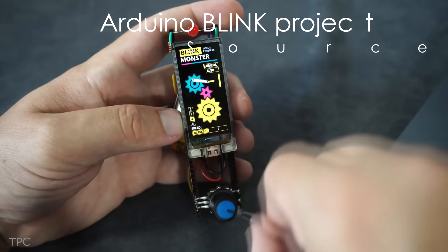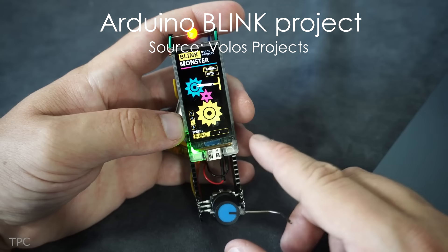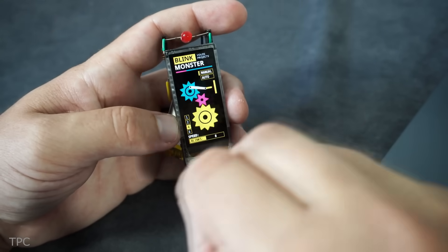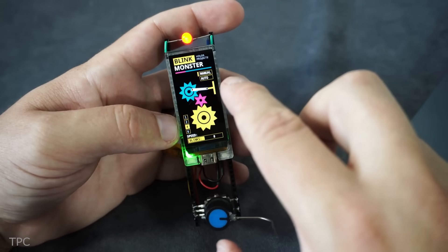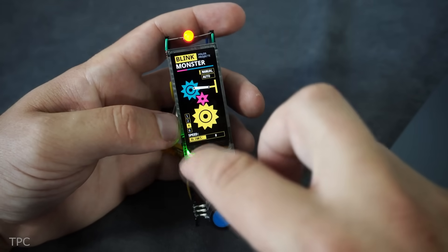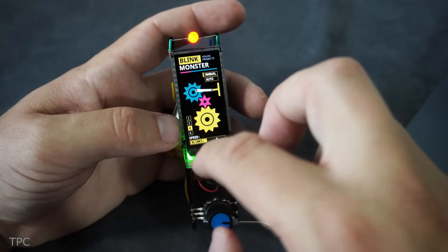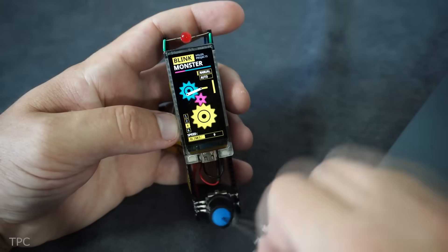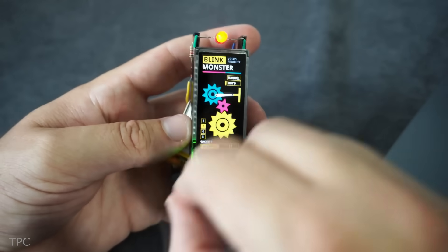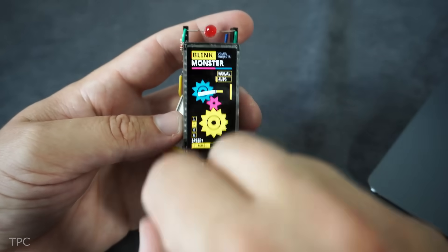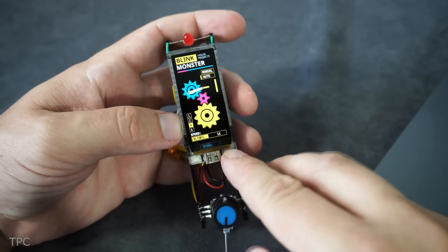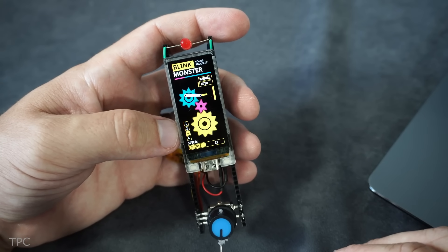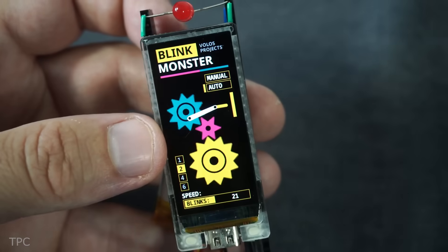Number 2. Volos created a unique way to blink two LEDs using a T-Display S3 AMOLED board. By combining basic shapes like circles, triangles, and lines, he crafted a lever that turns the LEDs on. These shapes are displayed precisely at the right moments and angles for perfect timing. There are two control modes. In manual mode, you adjust a potentiometer to activate the circuit. Pressing a button switches it to auto mode, so you can sit back, relax, and enjoy the LEDs blinking effortlessly.